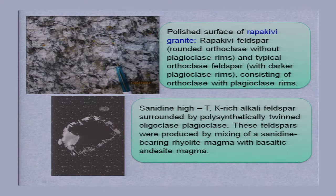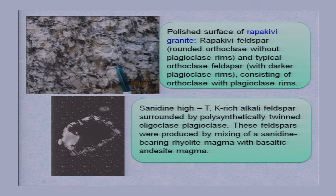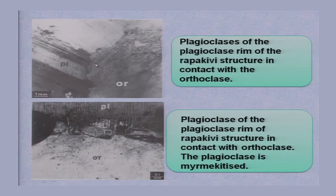Oligoclase is again a variety of plagioclase. These feldspars were produced by mixing of sanidine-bearing rhyolite magma with basaltic andesite magma. So, if you find such a texture, it indicates mixing of two types of magma.